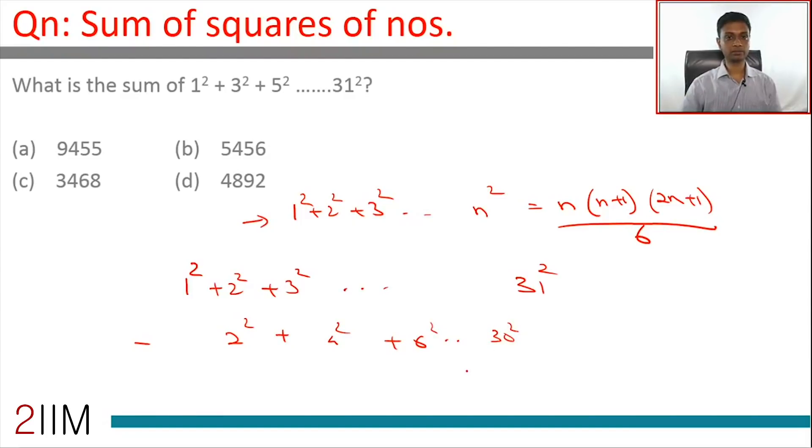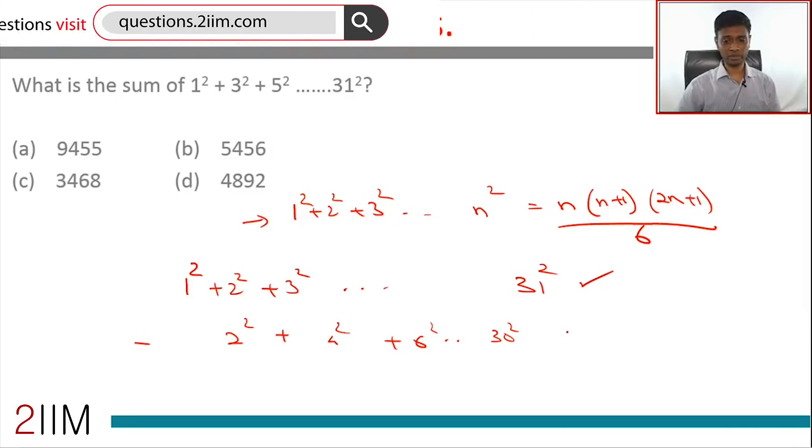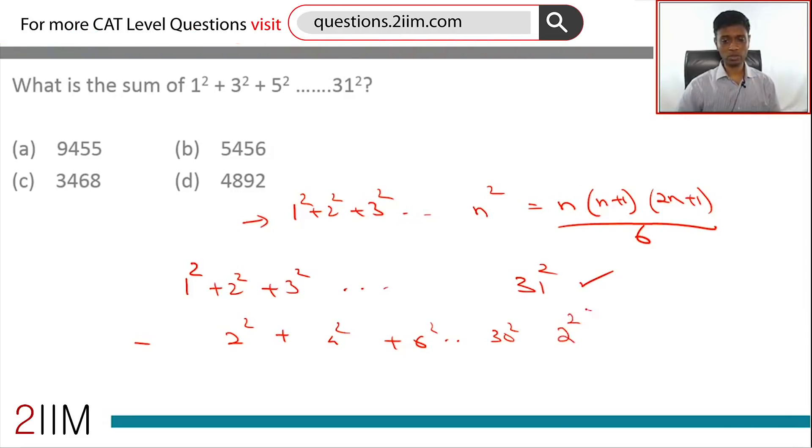We can find this out. 2² + 4² + 6² + 8² all the way to 30²—take 2² out, this is just 1² + 2² + 3² all the way to 15². This we also know. Find this, find this, subtract the second one from the first one.